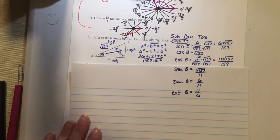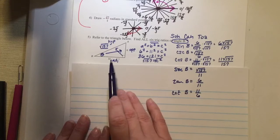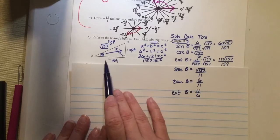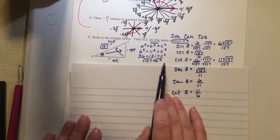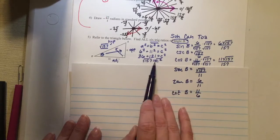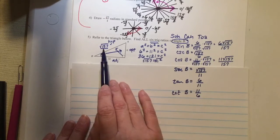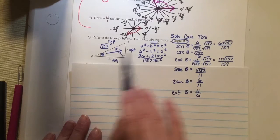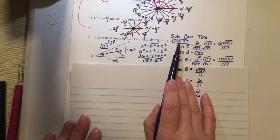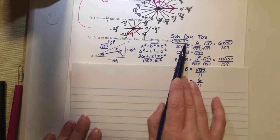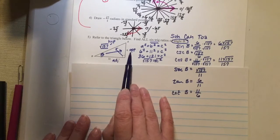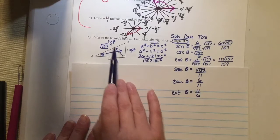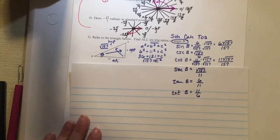So being able to find all six trig ratios given a right triangle — if you know two sides and need to find the third, that's where the Pythagorean theorem comes into play. Don't be alarmed if you end up with a square root — that's okay. In order to label the sides, you have to know which angle you're focused on. Here they said angle B, so theta is there. Your opposite is always across from the angle. Hypotenuse is always across from the 90. The third side is the adjacent.